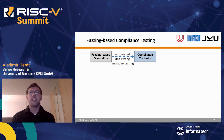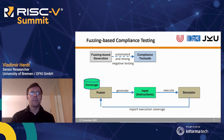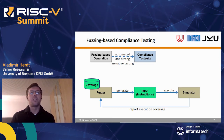Our approach uses fuzzing-based techniques to generate a compliance test suite in an automated way with strong negative testing capabilities. Technically we use coverage-guided fuzzing here. It works by generating new inputs, which from the fuzzer perspective are plain byte streams and in this context are simply interpreted as RISC-V instructions. Each such input is executed on a RISC-V simulator, which is used to drive the test generation process.